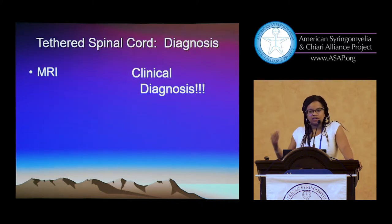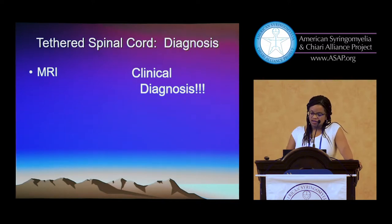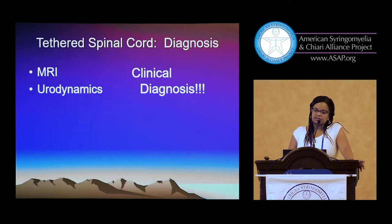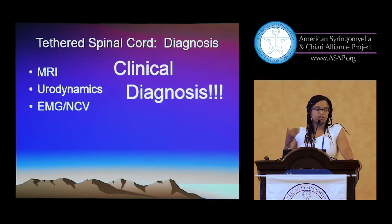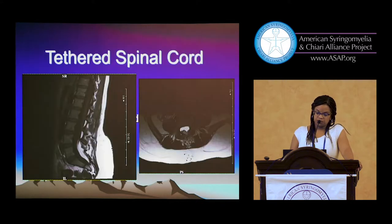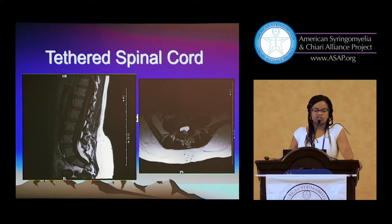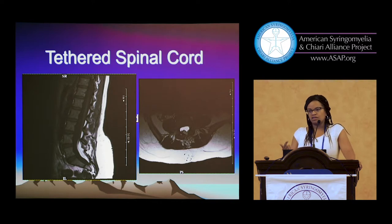So how do we diagnose tethered cord with all of these symptoms and signs? MRI is kind of the gold standard, but it's really a clinical diagnosis. We get urodynamics and sometimes EMG nerve conduction studies, but it's really the patient's symptoms and signs. MRI really tells us where the patient is tethered, not so much whether or not they're tethered. When symptoms and signs go along with tethering, and there's a suspicious MRI, we usually explore them.